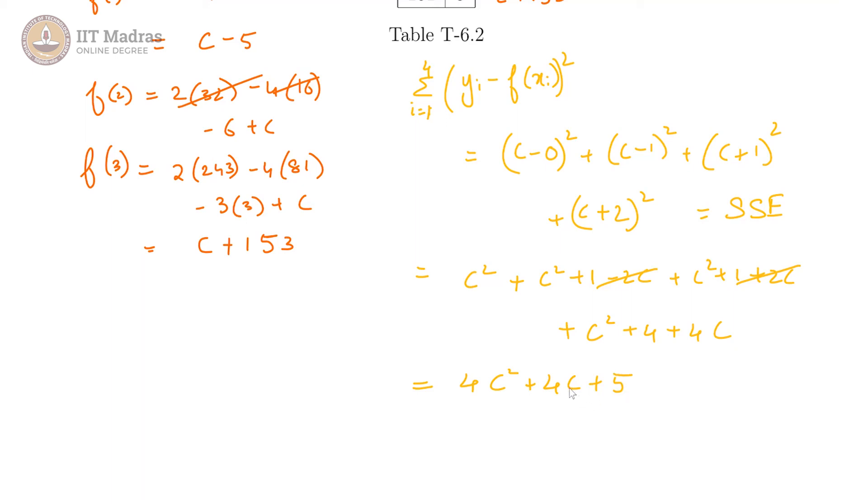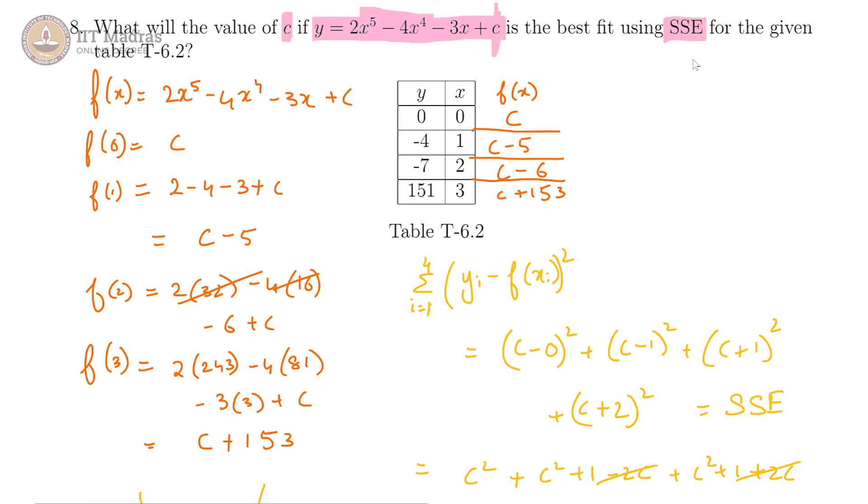This is our sum squared error. It is a quadratic in c and for minimum, this is also an upward facing quadratic because the coefficient of c square is greater than 0. It will be a parabola like this and the minimum occurs at this point which is the vertex of the parabola, and that we know is minus b by 2a. Here minus b is minus 4 and a is 4, so 2a is 8, so you get minus 1 by 2. For c equals minus 1 by 2, we get the minimum sum squared error.